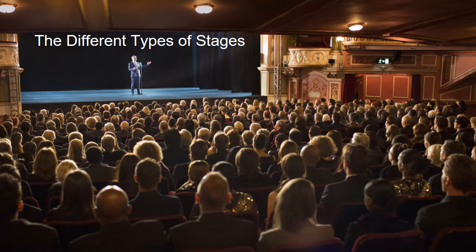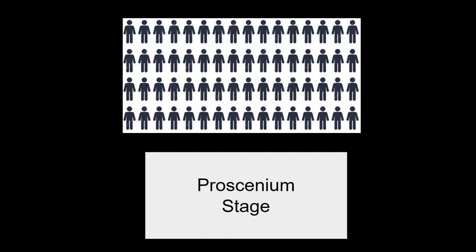Let's start with the first one: the proscenium stage. You are very familiar with this stage because it is the one we have here at Fort Campbell High School. The proscenium stage is probably the type of stage you will find most common throughout the United States and around the world. It's kind of like a movie theater where all the audience sits right across from the stage — everybody is in one direction.